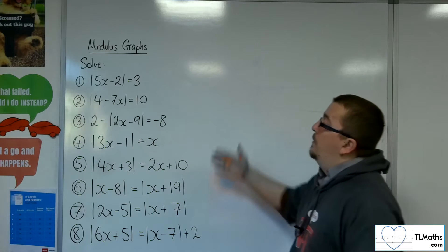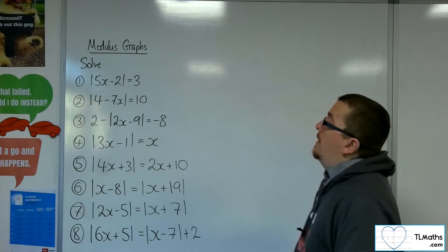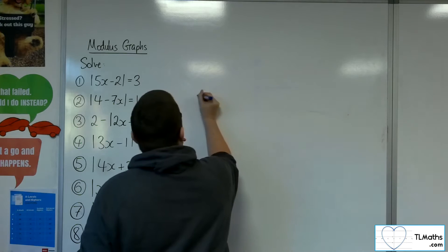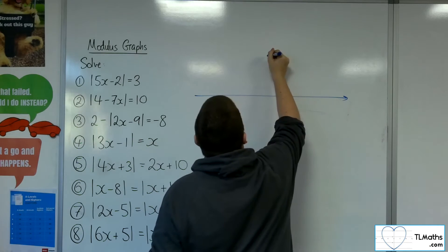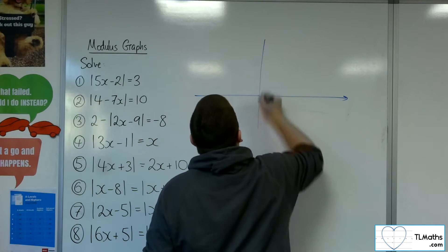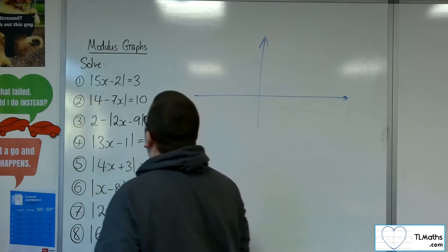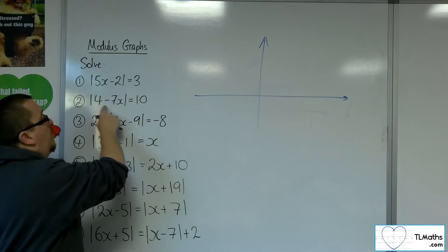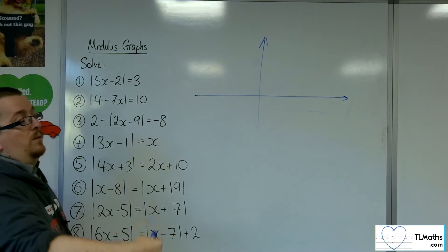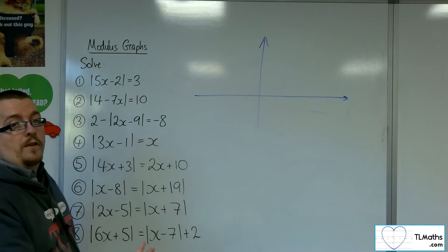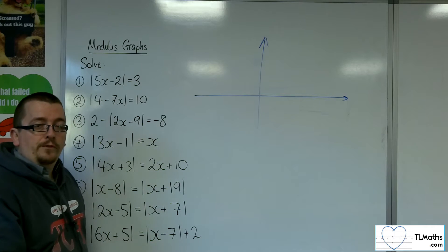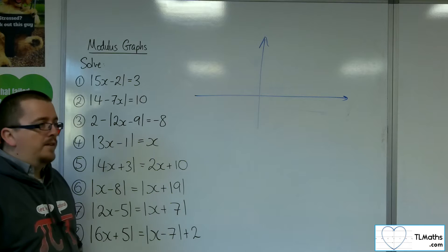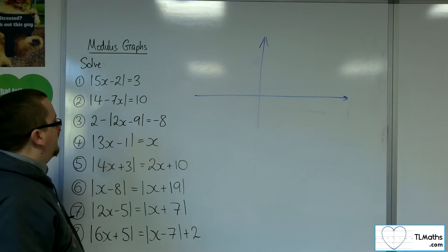Let's have a look at number 2: mod of 4 minus 7x is equal to 10. You could just go straight in with 4 minus 7x equals 10, and minus 4 plus 7x equals 10, solve those equations and get your two results. I'm still going to go with the graphical approach just to get us into the swing of doing this.